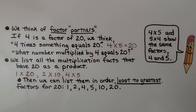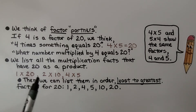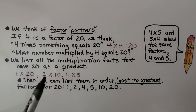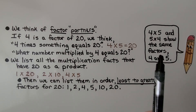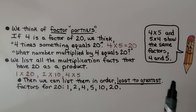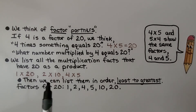We think of factor partners. If 4 is a factor of 20, we think 4 times something equals 20 — that would be 4 times 5. We list all the multiplication facts that have 20 as a product: 1 times 20, 2 times 10, and 4 times 5. Then we list them in order from least to greatest: 1, 2, 4, 5, 10, 20. Note that 4 times 5 and 5 times 4 show the same factors, so we only need to list each factor once.